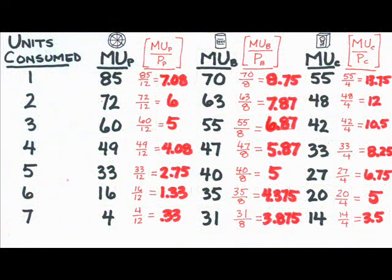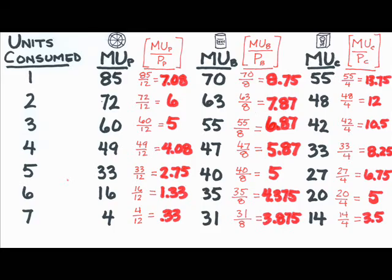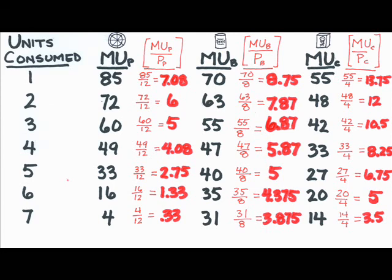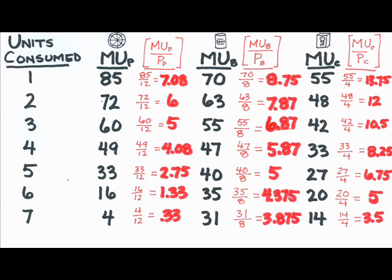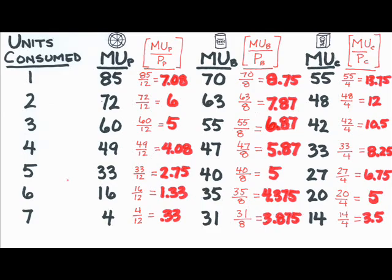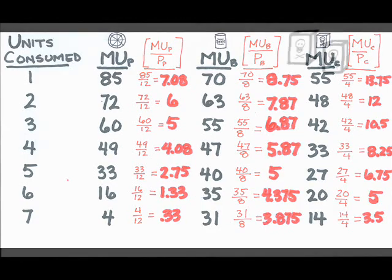What will he choose next? Now that the first pack of cigarettes has been consumed, the question is, will this consumer choose the first pizza, the first beer, or the second pack of cigarettes? At 12 units of utility per dollar, cigarettes still win out over the first pizza, 7.08 units of satisfaction per dollar, and the first beer, 8.75 units of satisfaction per dollar. So the consumer chooses the second pack of cigarettes, leaving him with $92.